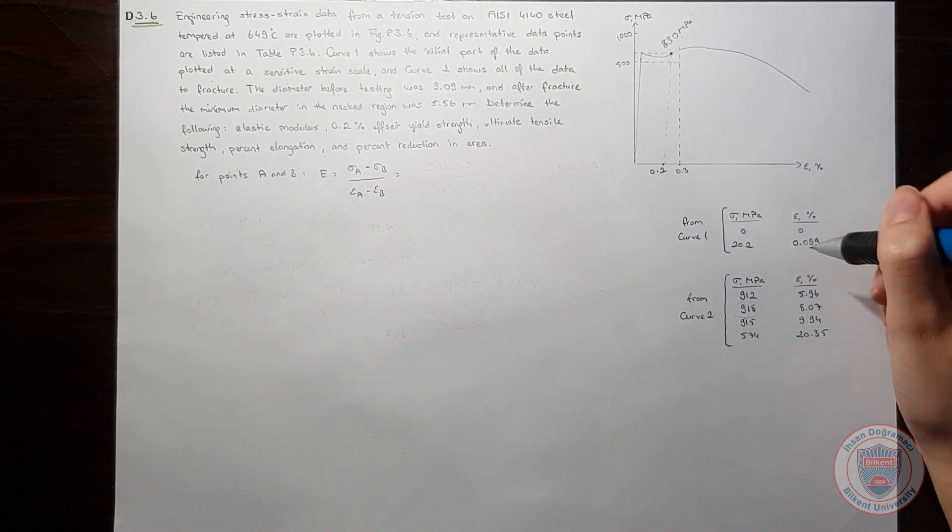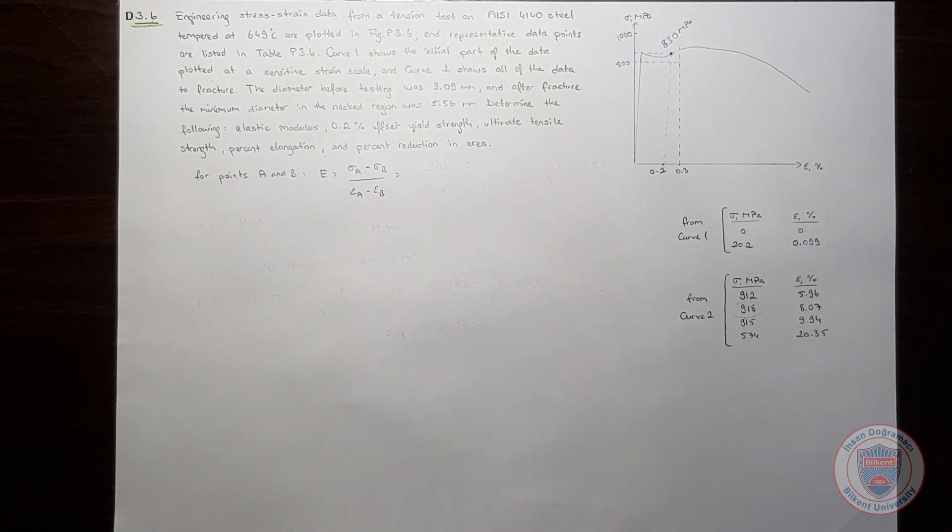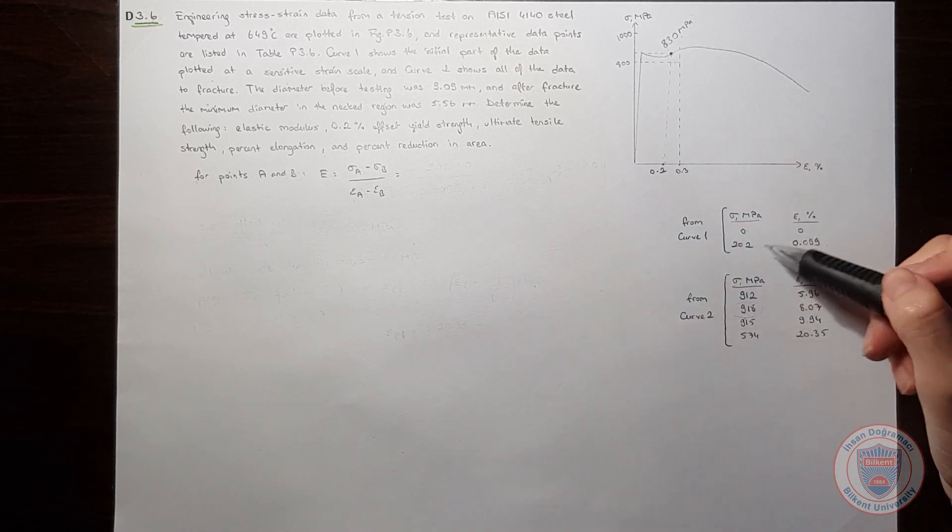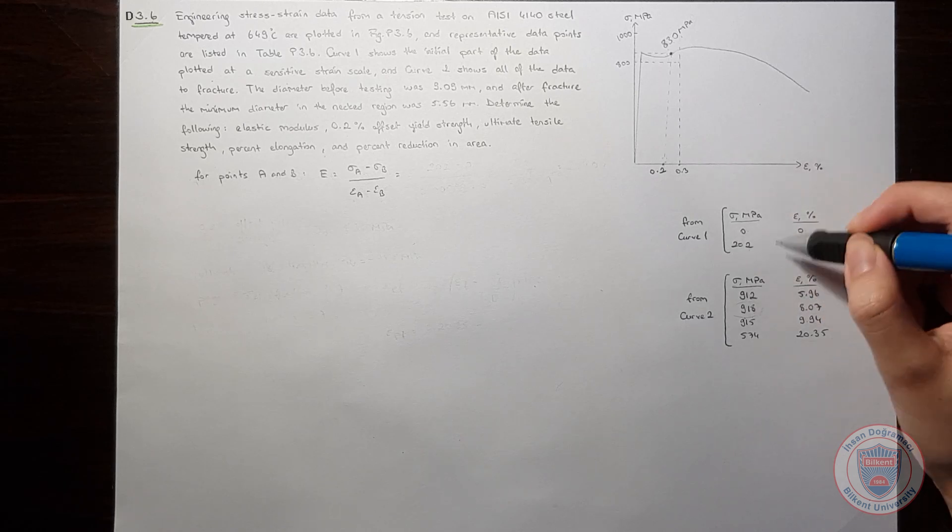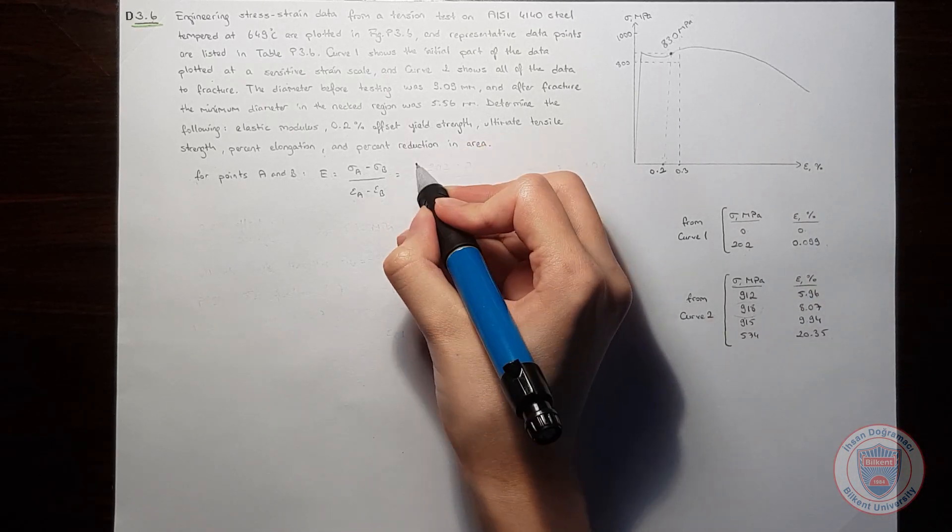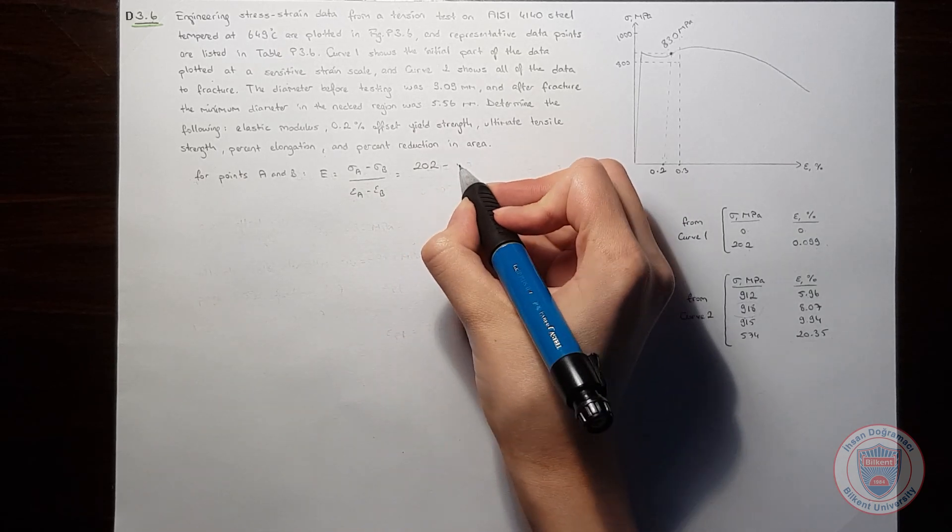When we look at the tables, I will choose the first two points to calculate these values, because I want them to be smaller than the yield strength. So the most safe part will be the first two points. So for point A, I will have 202 for the stress, and for B it is 0.